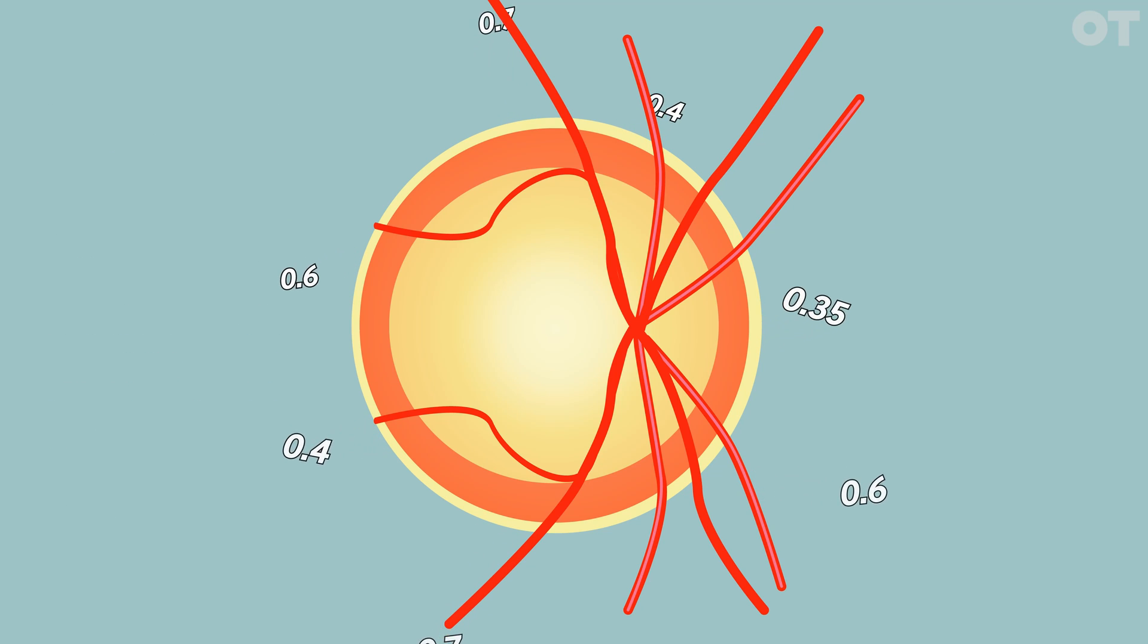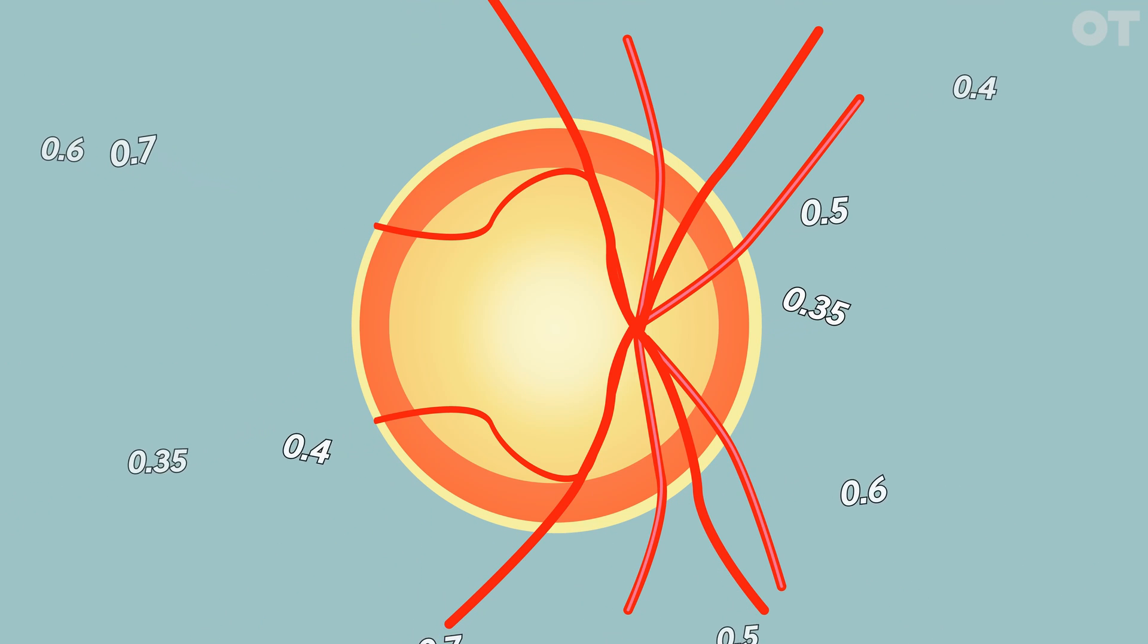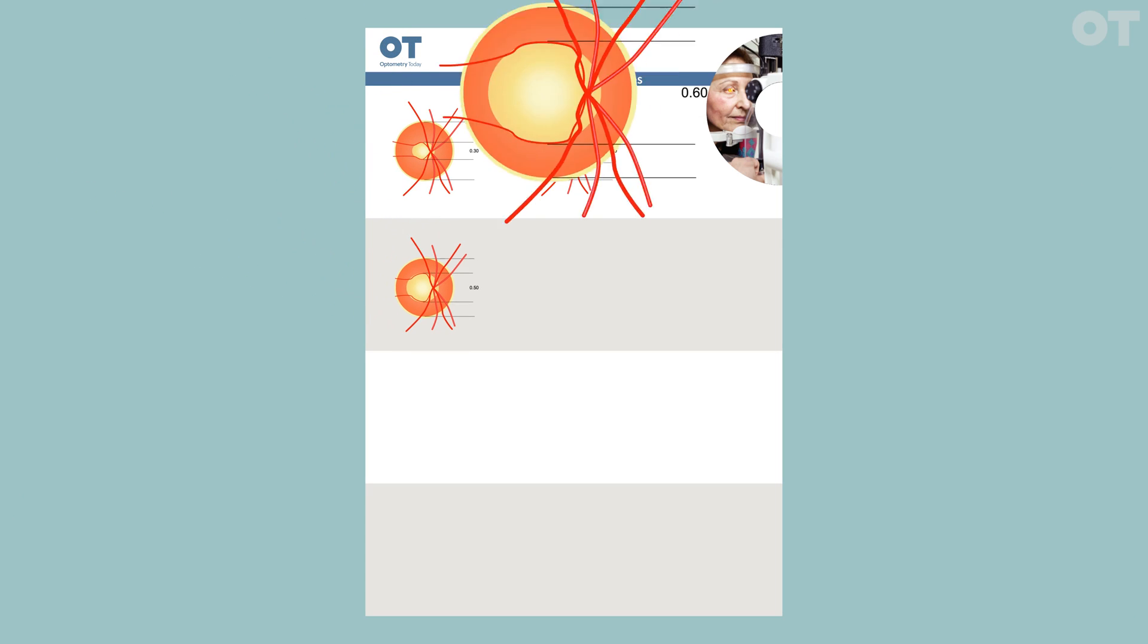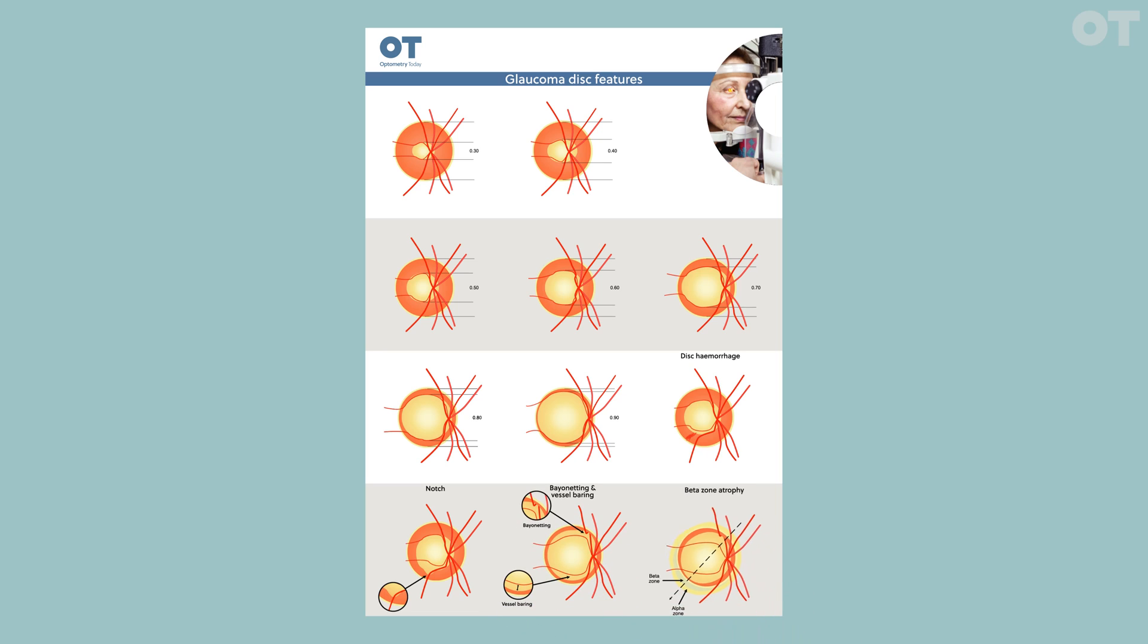So, how do you go about getting a more accurate CD ratio? There are a few methods. The simplest is to compare against a visual grading scale. There is one available on the OT website, and this can be a great way to improve your record-keeping.